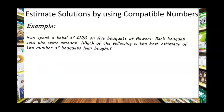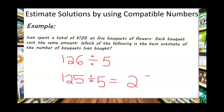Let's try this problem. Ivan spent a total of $126 on 5 bouquets of flowers. Each bouquet costs the same amount. We can use compatible numbers to estimate the solution. In order to complete the actual problem, we would have to divide: 126 divided by 5. Since multiples of 5 end in 5 or 0, and 126 is very close to 125, we can do 125 divided by 5, which is 25. So we know our answer is very close to 25 dollars.